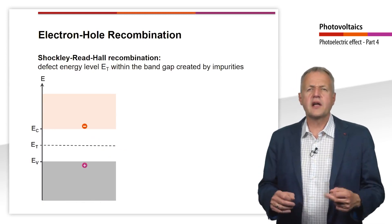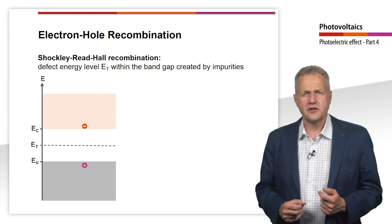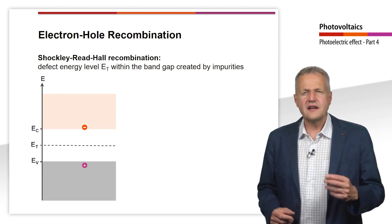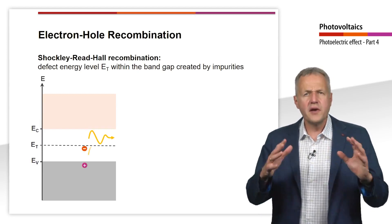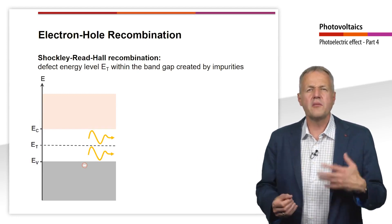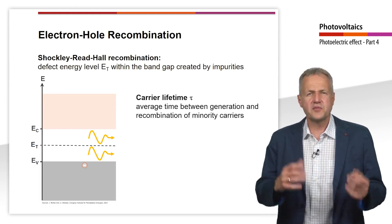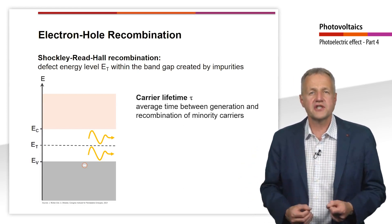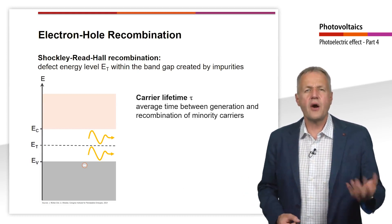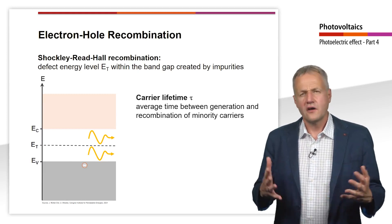This process becomes more likely if there is an impurity — for example, an iron atom — in the middle of the band gap. This additional energy level in the forbidden zone of silicon makes the process of recombination much more likely. The average time that elapses between the generation and recombination of a minority charge carrier is called the lifetime tau. It is about 100 µs in doped silicon nowadays.